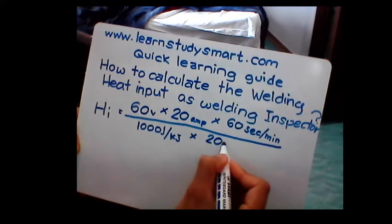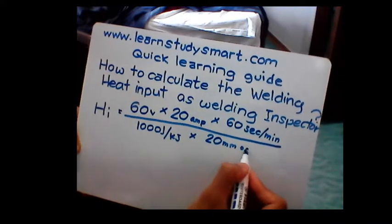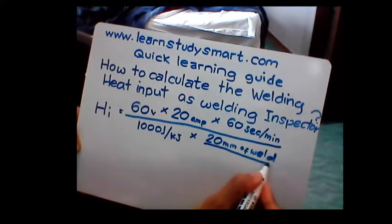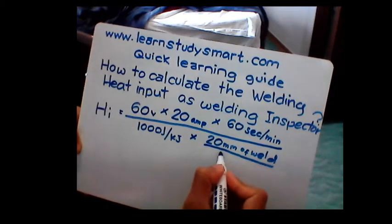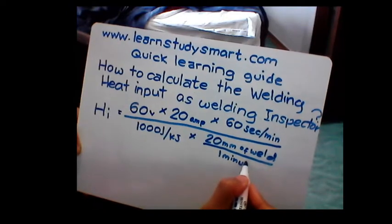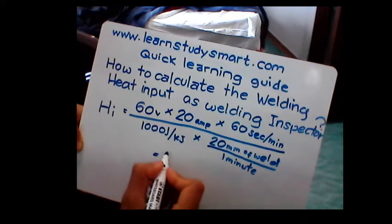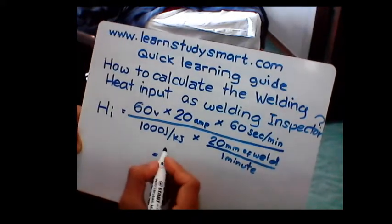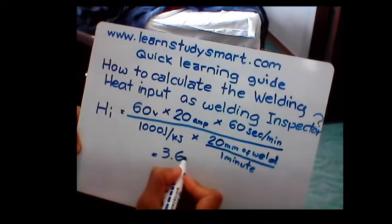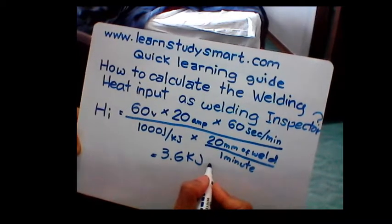20 millimeter of weld over one minute. And the heat input is equivalent to 3.6 kilojoule per millimeter.